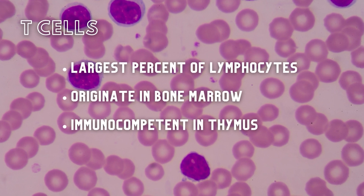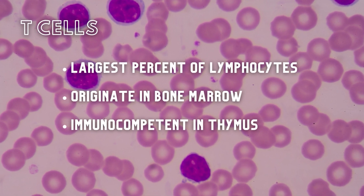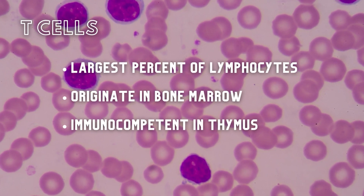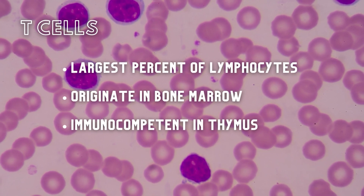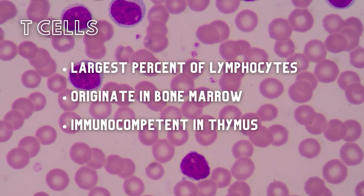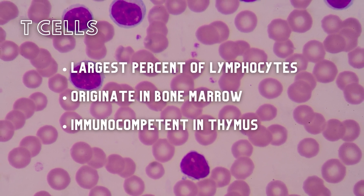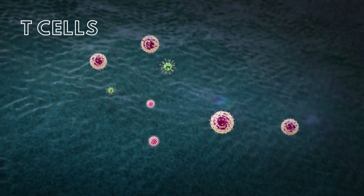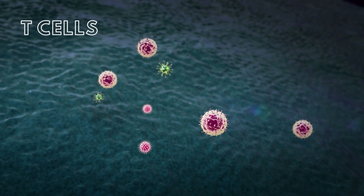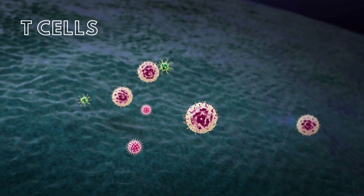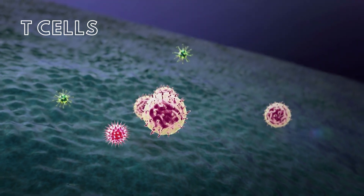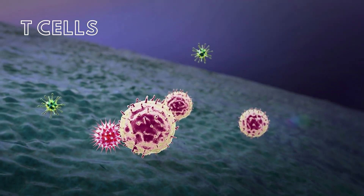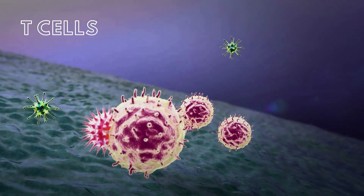T cells comprise the largest percentage of lymphocytes. These cells originate in bone marrow and then migrate to the thymus to become immunocompetent, or activated. When properly stimulated, T cells differentiate into several different cell types that will attack antigens and increase the body's immune response.